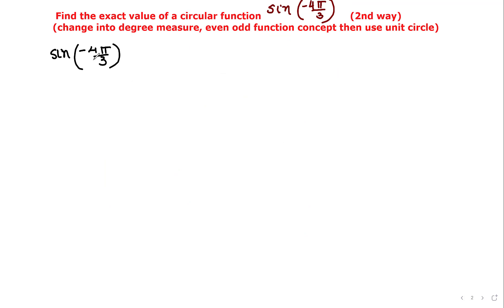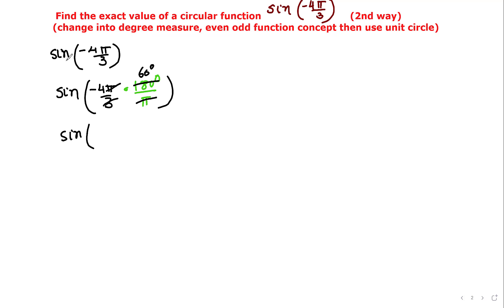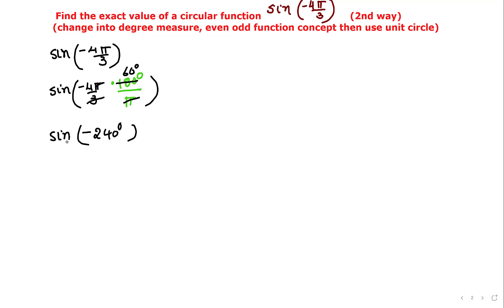For the second method, we'll change the radian measure into degree measure, then use the concept of even and odd functions, then use the unit circle. Again, we multiply by 180 degrees over pi, and sine(-4π/3) can be written as negative 240 degrees.